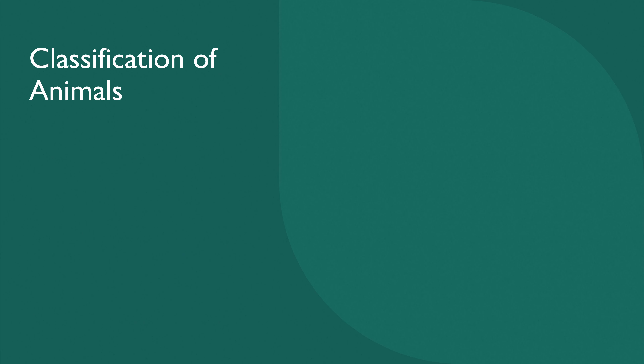First we will see what is classification of animals. In Sinhala, classification means 'Vargi Karane.' There are many methods to classify animals in science, but here you are going to study about one feature that we use to classify animals into two groups.